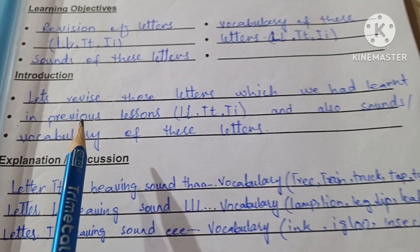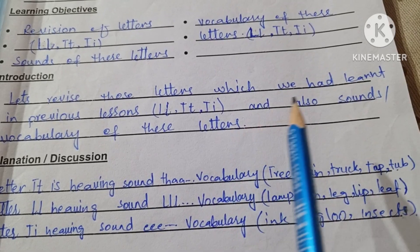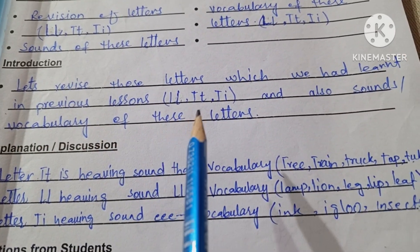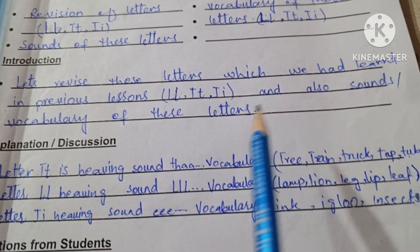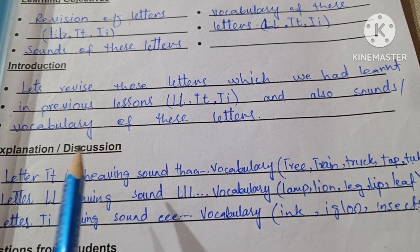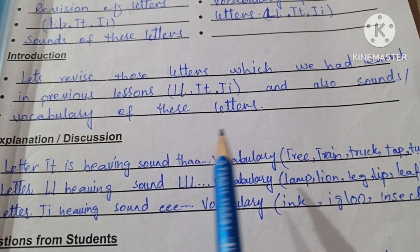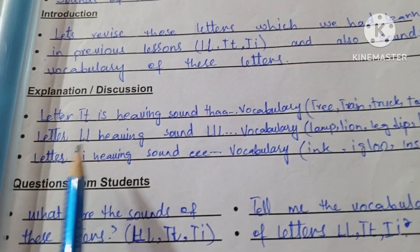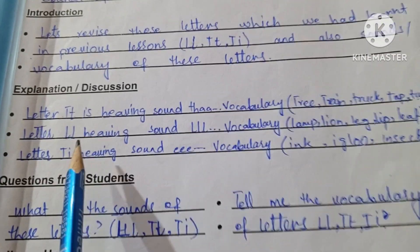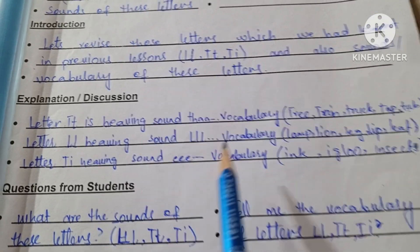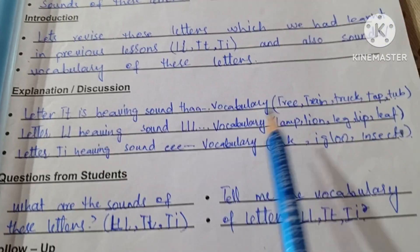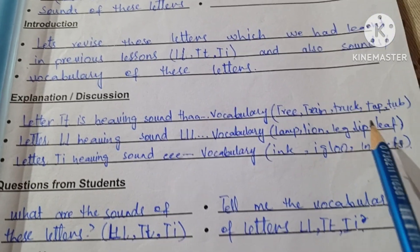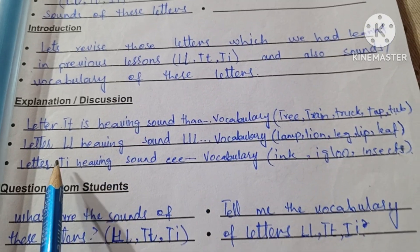Introduction: let's revise those letters which we had learned in previous lessons — L, T, and I — and also the sounds and vocabulary of these letters. Explanation: letter T has the sound 'T', with vocabulary tree, train, truck, tap, and tug.